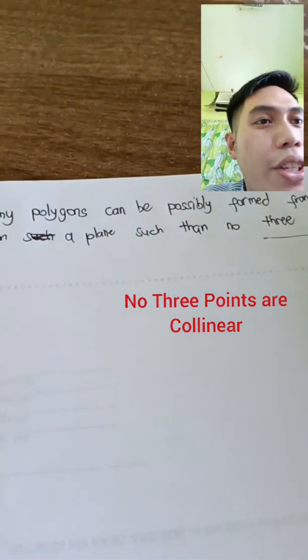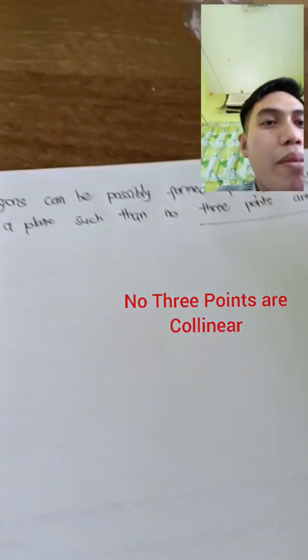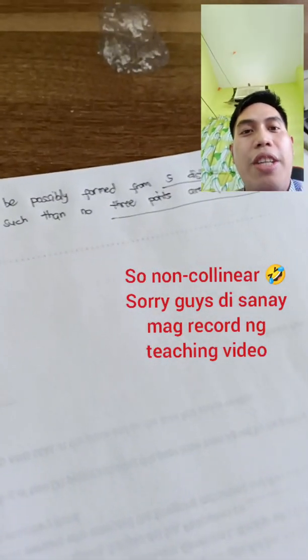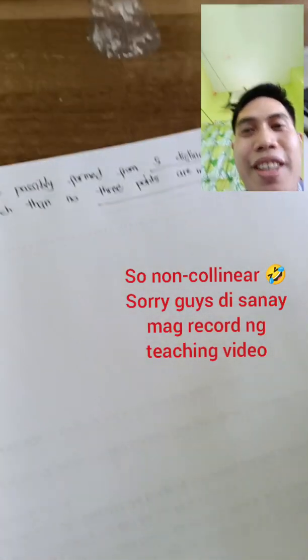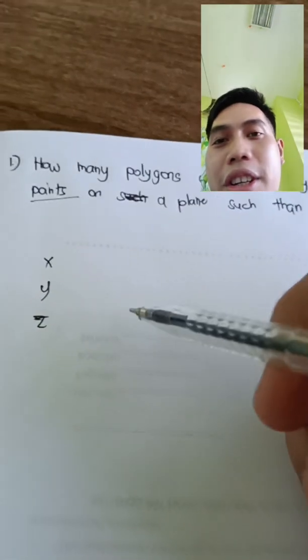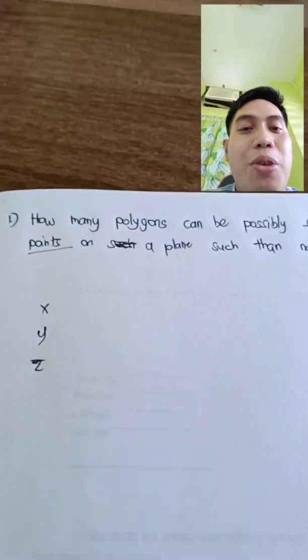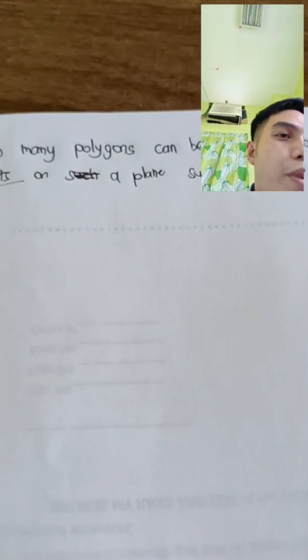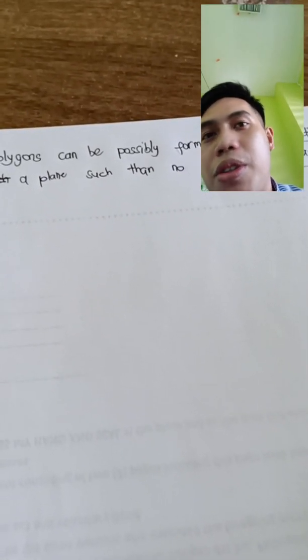Not collinear. So meaning when we say collinear, it lies on the same line. So non-collinear is the total opposite. For example, since three points, let's say XYZ, when we say these three points are non-collinear, meaning they don't lie on the same line. So what we're going to do for this problem is we should identify that the arrangement is not important.